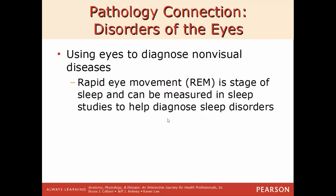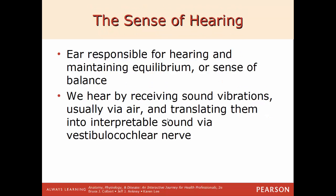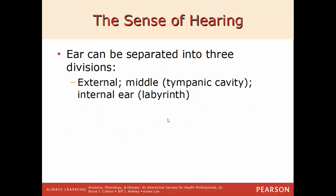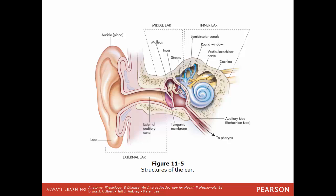Rapid eye movement or REM is a stage of sleep that can be measured in sleep studies to help diagnose sleep disorders. Moving on to the sense of hearing: the ear is responsible not only for hearing but also for maintaining equilibrium or balance. We hear by perceiving sound vibrations in the air, which are translated into interpretable sound via the vestibulocochlear nerve in the brain. The ear has three main divisions: the external ear, the middle ear, and the inner ear.